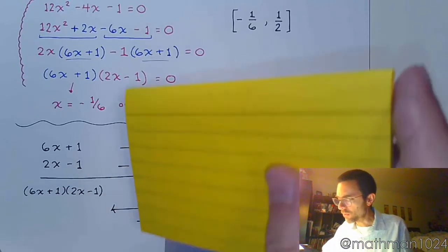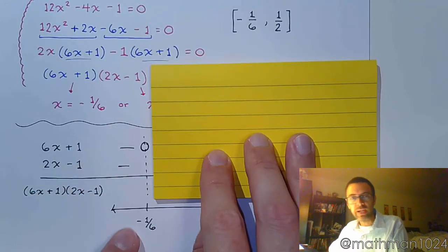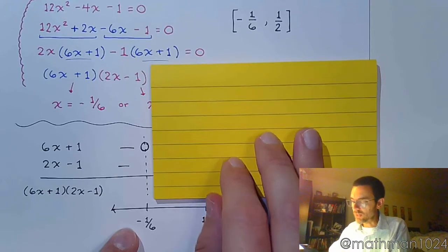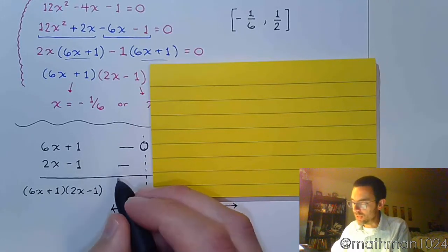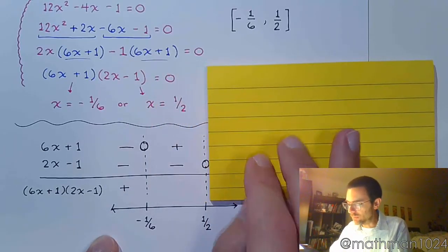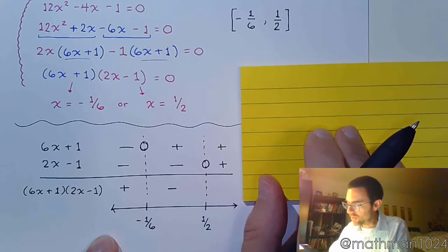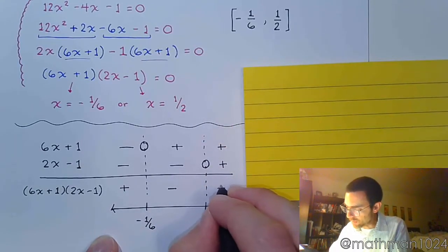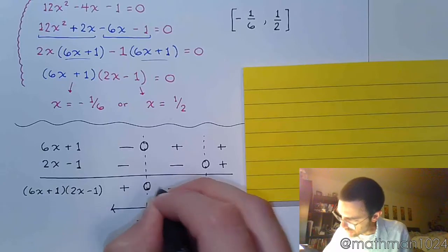So, just as before, region by region, let's look at what we have. In this region, for anything that's less than negative 1 over 6, you're going to have a negative factor times a negative factor, which gives you something that's positive. In the region in the middle, positive times negative is negative. And the region on the right, these guys are both positive. And at the critical values themselves, you're going to be 0.